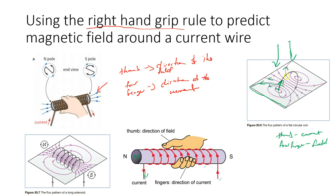Drawing those field lines out, you realize that when you have magnetic field lines coming out of a side, that is the north side of the coil. When magnetic field lines are going in, that is the south side of the coil. That is how you predict which side of the coil is north and which is south using the right hand grip rule — treating each end of the coil like a straight wire, examining current coming out and going into the paper.